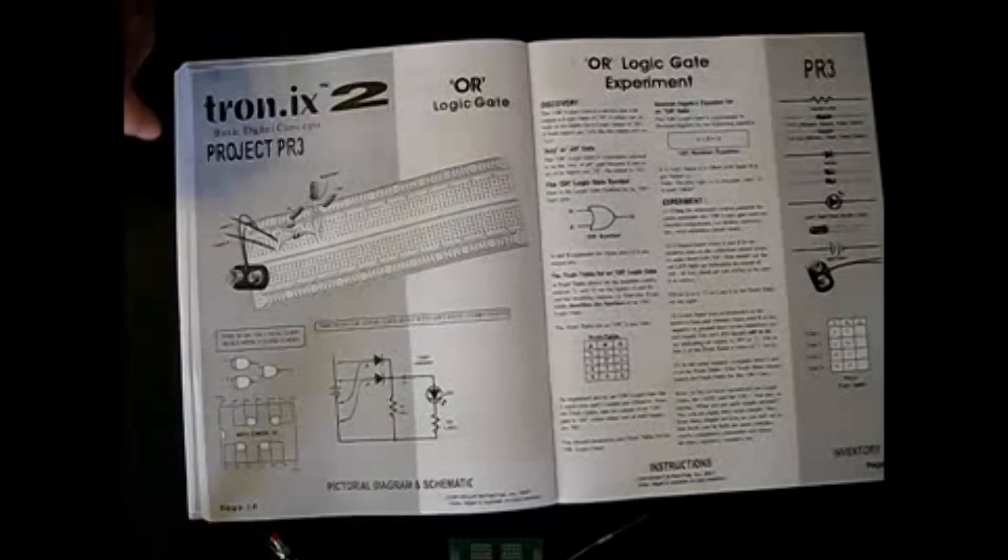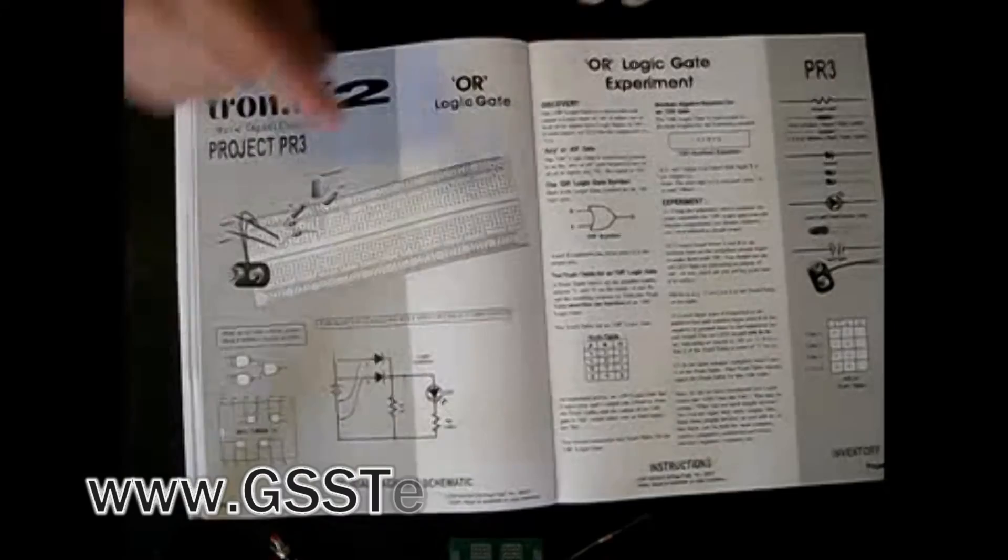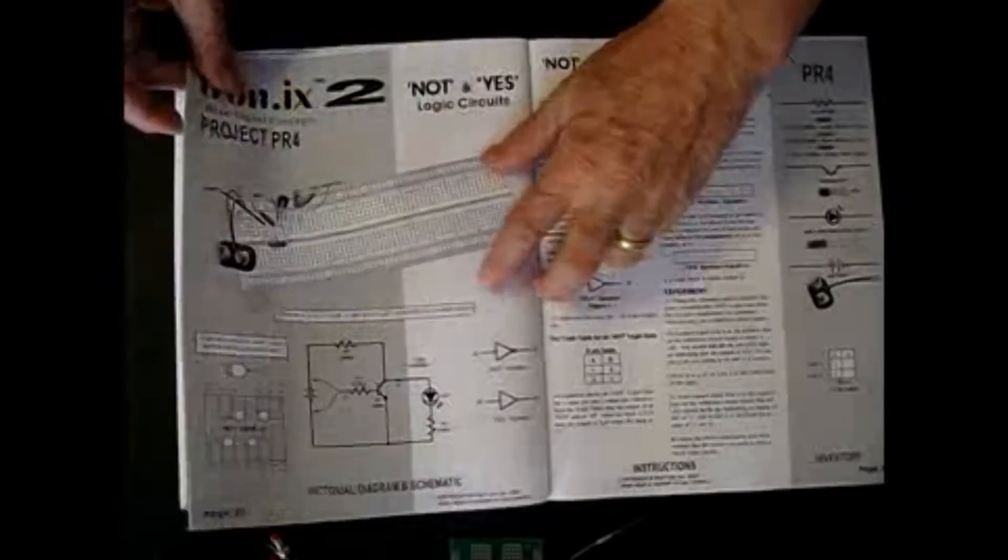The next experiment is the OR gate. Again, you build it with discrete components, diodes, resistors, and an LED. We show you the schematic, we show you the symbol, the truth table, and the Boolean equation.